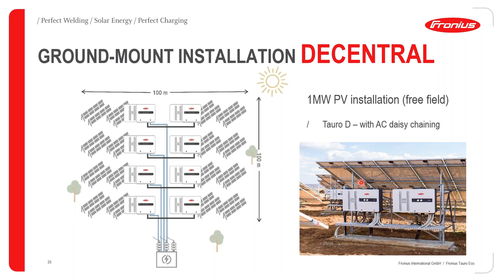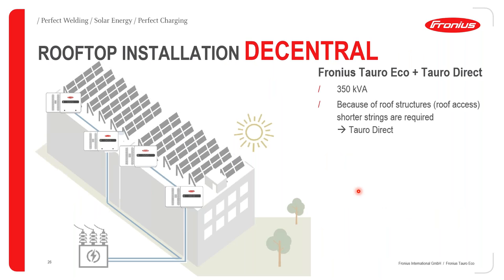Here is an example of how it looks in practice. This particular inverter was daisy chained with this one — the output goes to the input of the next inverter, and then from the output it goes to the central power transformer. Now let's look at the rooftop installation for the decentralized variant — also implementing the daisy chaining, saving costs, with fewer AC runs going to the transformer.